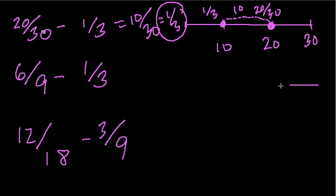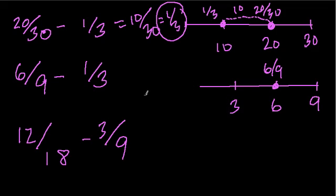Now we move on to 6 over 9 minus 1 over 3. 3 and 9 both go very nicely into 9. 6 out of 9 would bring me about here. 6 ninths is like 6 out of 9. 1 third of 9 is 3. Why? Well, because 3 goes into 9 three times, and 1 third of 9 is 3.